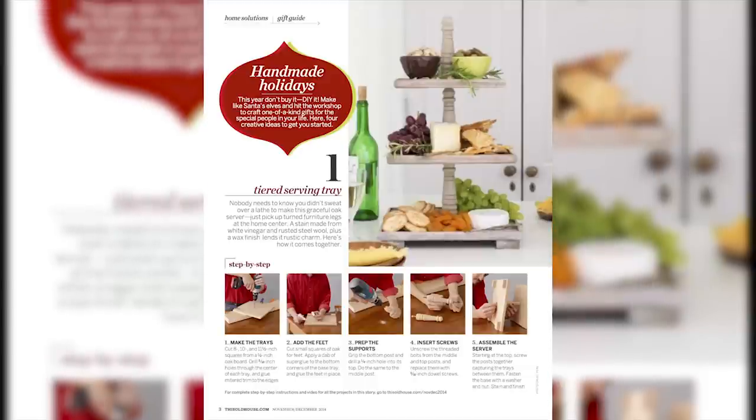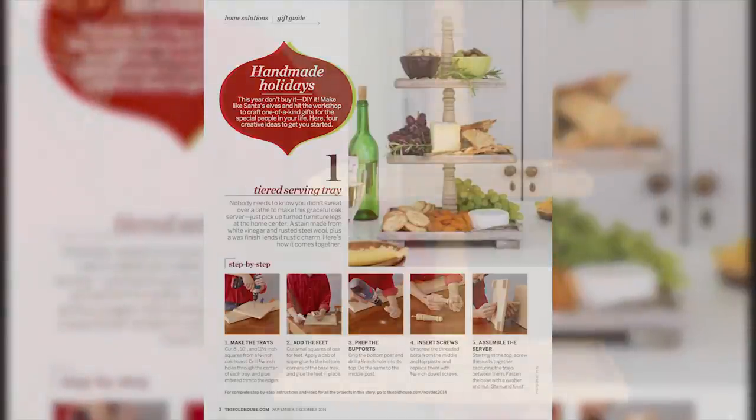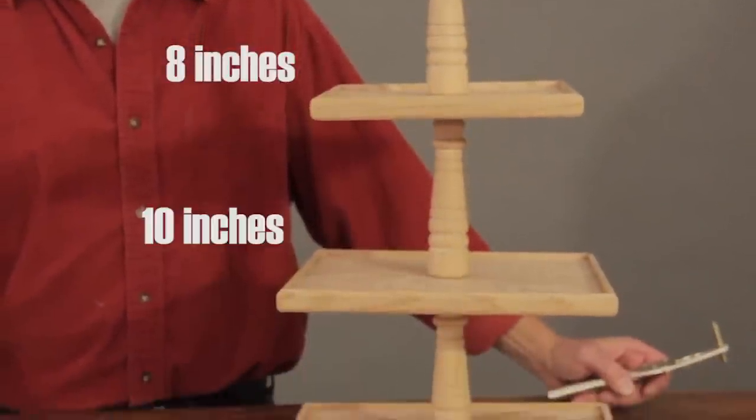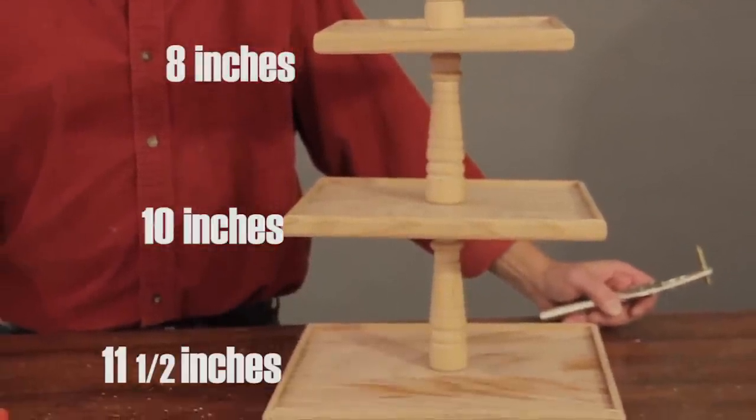To get started, cut a one-half by twelve inch oak board into three square trays, one measuring eight inches, one ten inches, and one eleven and a half inches.